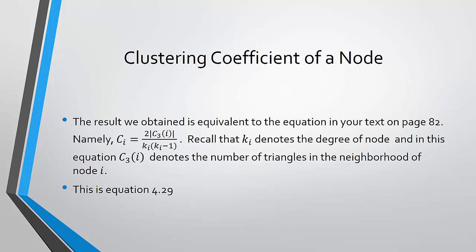The result we obtained is the same as the equation in your text on page 82. The clustering coefficient of node i is the ratio of 2 times the cardinality of C sub 3i — which is the number of triangles induced by the neighborhood of node i, representing a cycle of length 3 — over k sub i times k sub i minus 1, where k sub i is the degree of node i. This is equation 4.29.